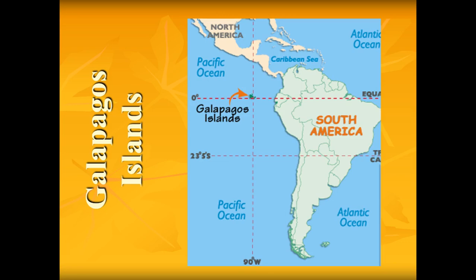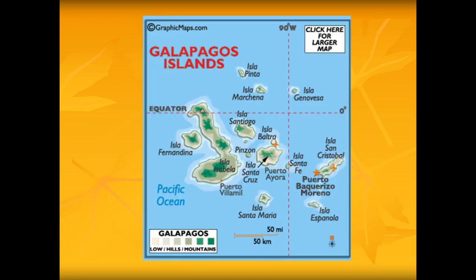This is where the Galapagos Islands are — they're just west of South America. If we zoom in on it, that's what they look like. There are many different islands; it's not just one.